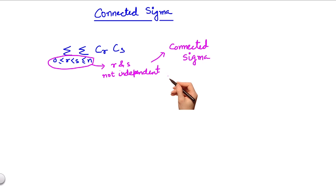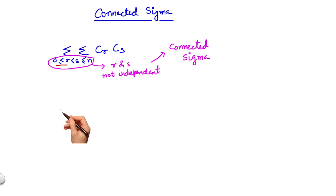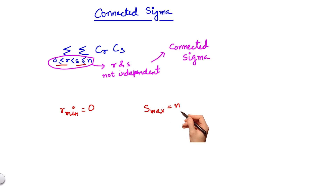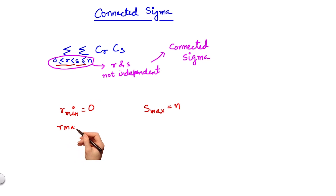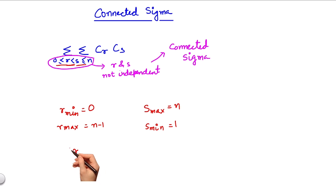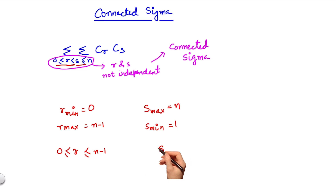Let us take a moment to reflect on what this expression really means. Since r is greater than or equal to 0, r minimum equals 0. And since s is less than or equal to n, s max is n. Now since r is less than s, r max is n-1. And since s is always more than r, s minimum equals 1. Therefore, r ranges from 0 to n-1, and s ranges from 1 to n.